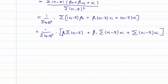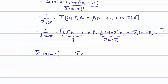Now I'm going to break the sum. We can take beta 0 out since it's a constant, giving us beta 0 times the sum of (xi minus x bar), plus beta 1 times the sum of (xi minus x bar) times xi, plus the sum of (xi minus x bar) times ui. Notably, the sum of (xi minus x bar) equals the sum of xi minus the sum of x bar, which equals n*x bar minus n*x bar, which is zero. So the beta 0 term disappears because beta 0 times zero equals zero.